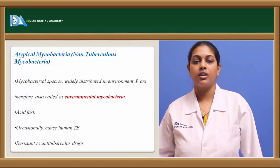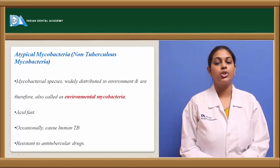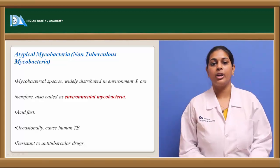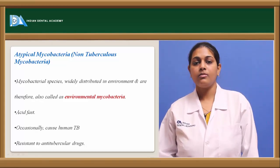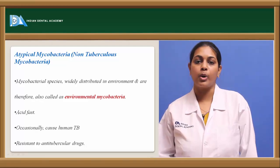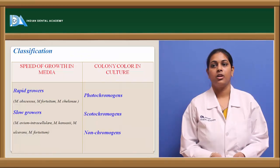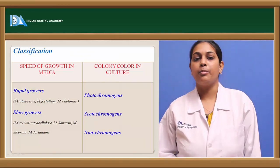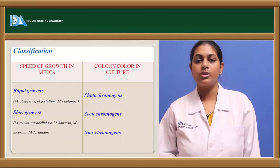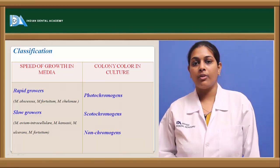Atypical mycobacteria do not respond properly to anti-tuberculous drugs — meaning they show resistance to antibacterial drugs. Coming to the classification of atypical mycobacterium species, otherwise known as environmental mycobacteria, they are classified based on the speed of growth in media into rapid growers and slow growers.